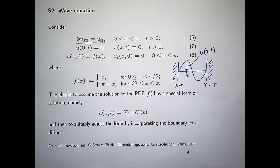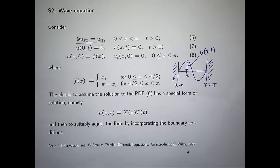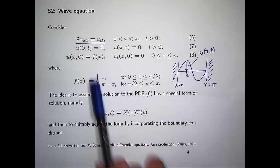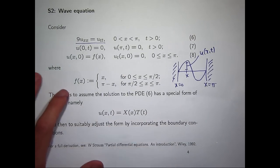What we do is start with a string, place it by plucking it, and let it go from rest. The string is going to vibrate up and down. How can we predict the displacement of the string at all points x along the horizontal axis at any time t in the future? That's the idea. The initial displacement, or the initial pluck, is given by a particular function.